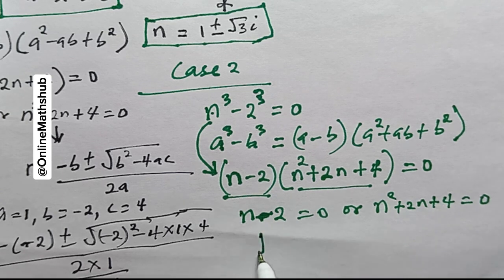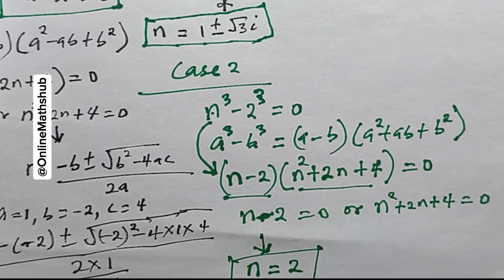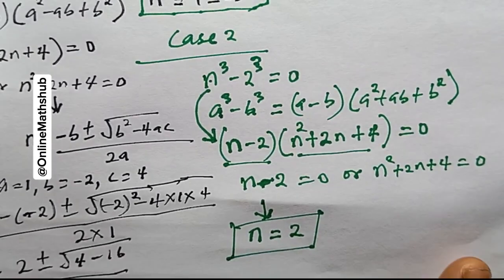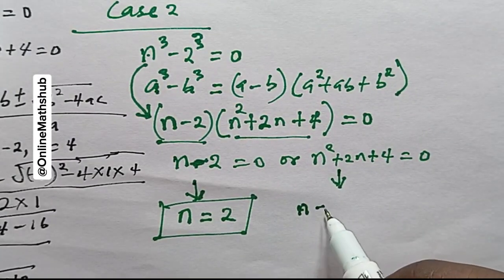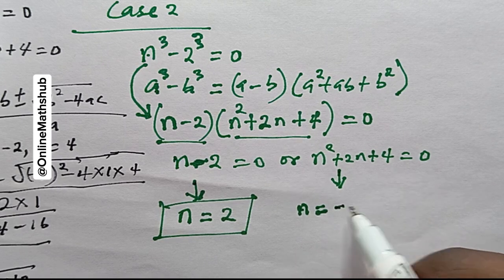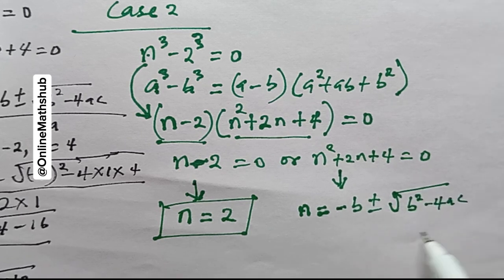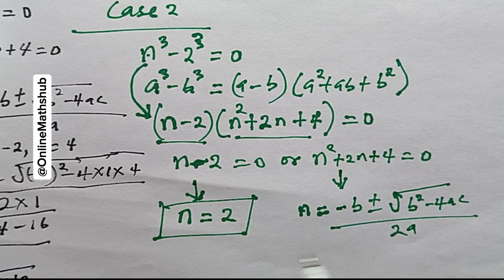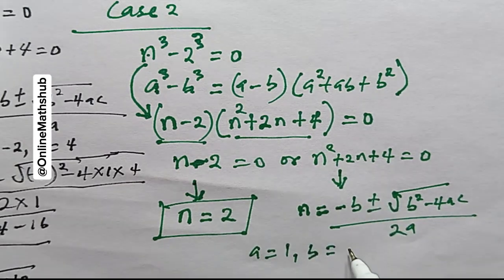From n - 2 = 0, we get n = 2, which is the fourth value of n. For n^2 + 2n + 4 = 0, we apply the quadratic formula n = (-b ± √(b^2 - 4ac)) / 2a, where a = 1, b = 2, and c = 4.